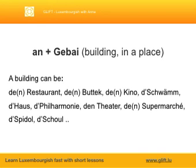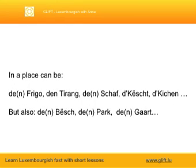We also use the preposition AN plus a GBAI — a building or place. A building can be the RESTAURANT, KINO, CHWAM, TAUS, PHILHARMONI, THEATER, SUPERMARCHET, SPIDOL, CHWAL, or BOUTECH — for example, ZEITUNGSBOUTECH or BLUMEBOUTECH. In a place can include THE FRIGOT, TIRAN, SHAF, KÖSCHT, KISCHEN, and also THE BUSCH. So we say ÖCH GIN AM THE BUSCH, or ÖCH GIN AM THE PARK, or ÖCH GIN AM THE GARD. This list is not exhaustive, but these places are very common and often used with AN.